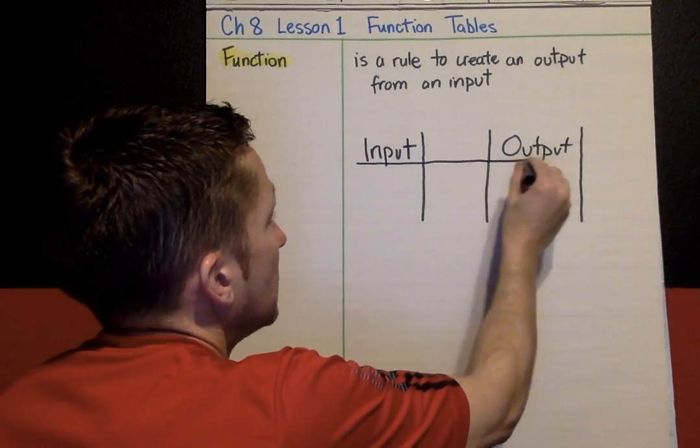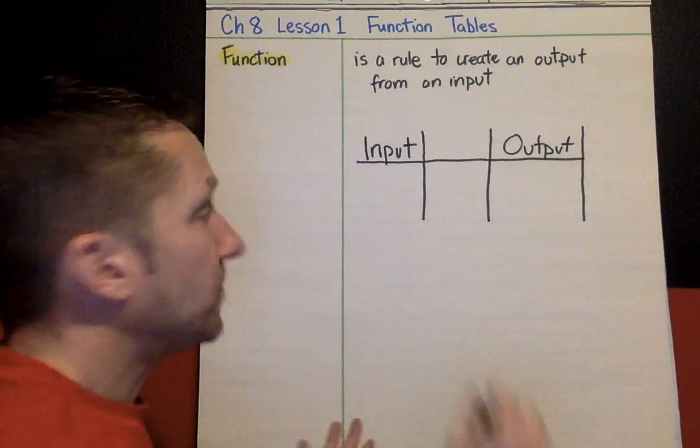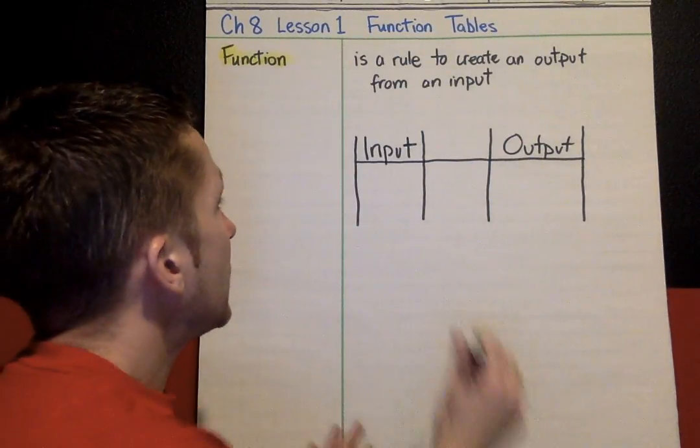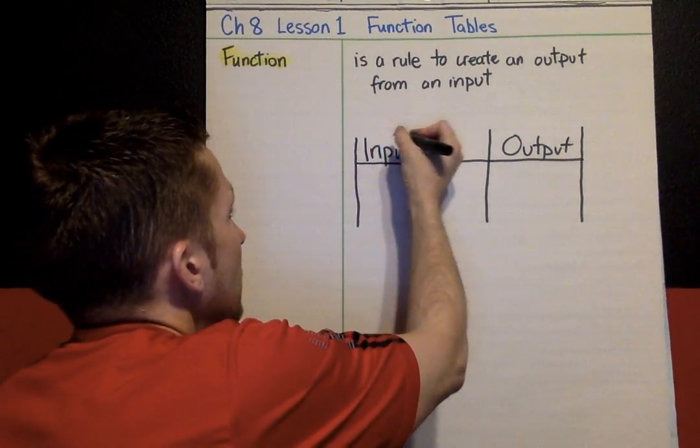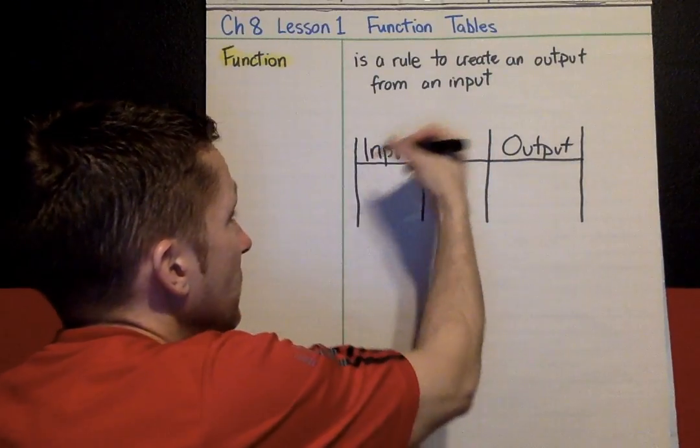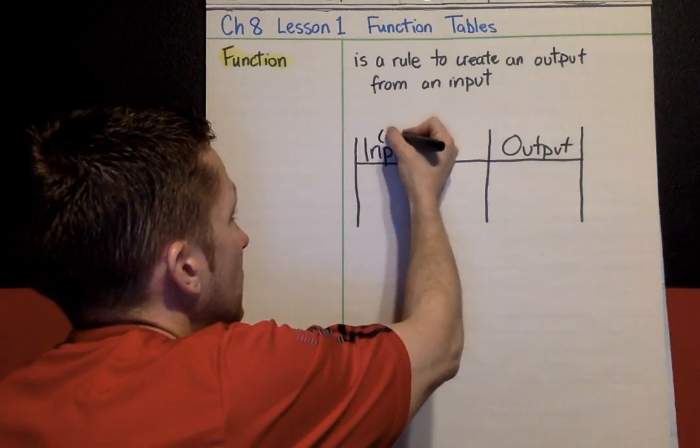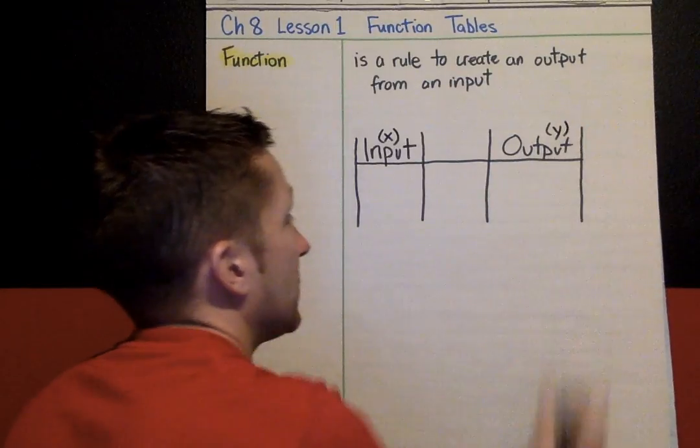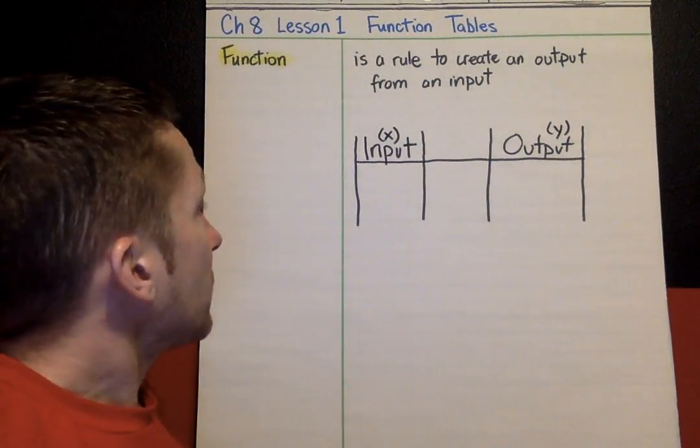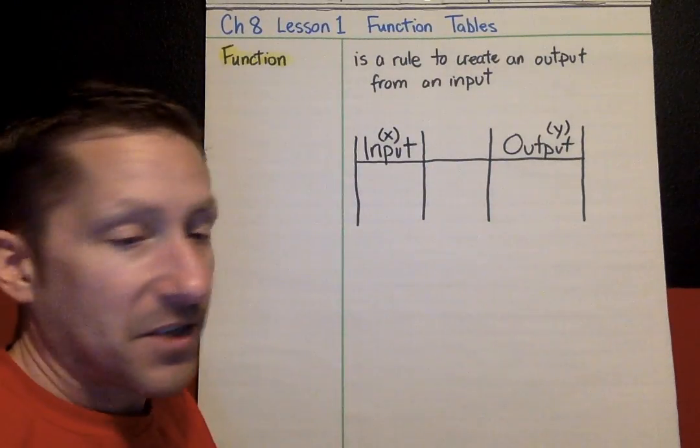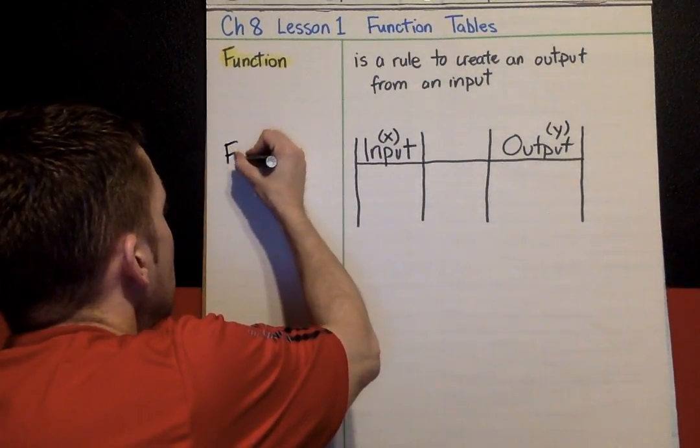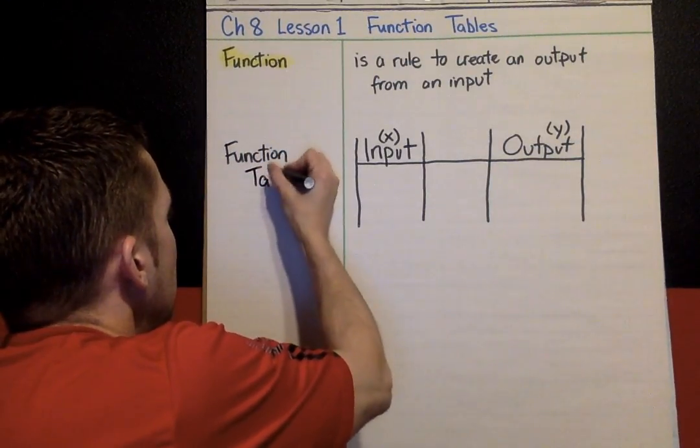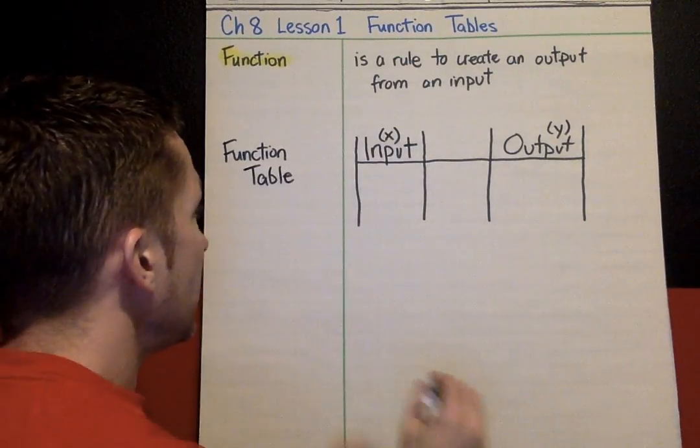This is making a function table. The input is also known as a few different terms. It is also the x value. The output is also known as the y value. This overall thing is a function table, so let's write that over here.